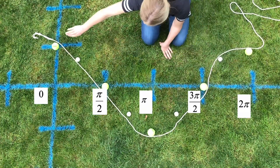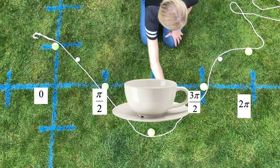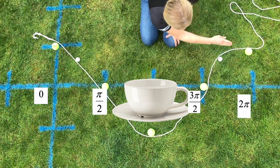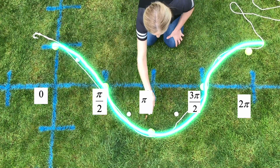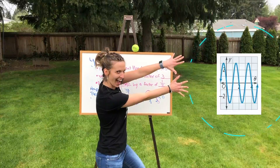Now cosine wave, what do we do? Cosine like a cup, we start up. High zero, low zero, high. To the sky!